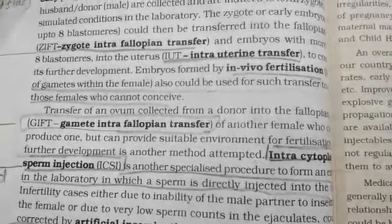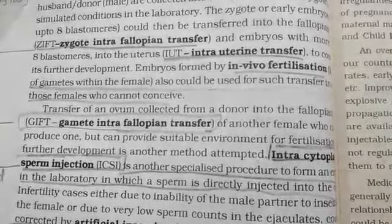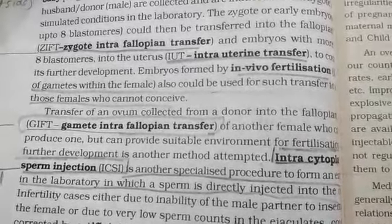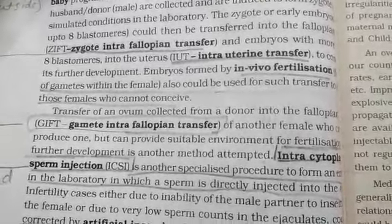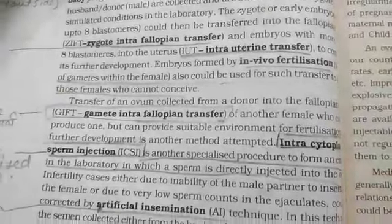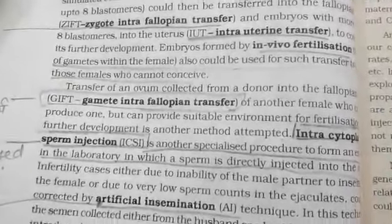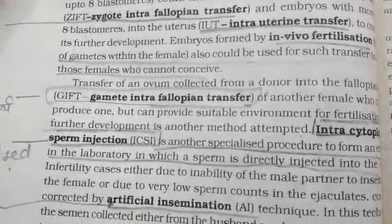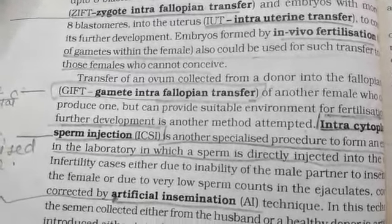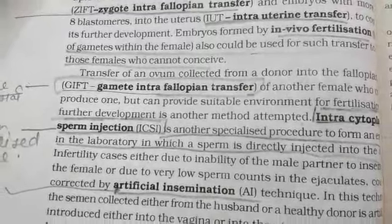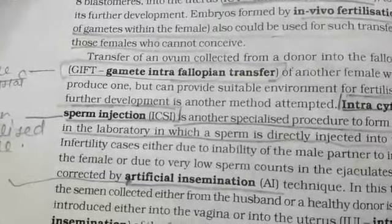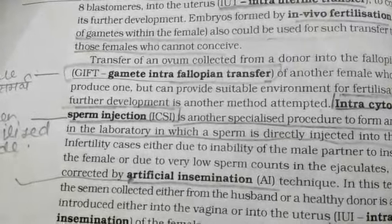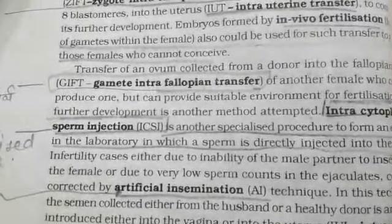Next is ICSI — Intracytoplasmic Sperm Injection. This is a sperm injection technique used for embryo formation. ICSI is another specialized procedure to form an embryo in the laboratory in which a sperm is directly injected into the ovum, leading to fertilization and embryo formation.